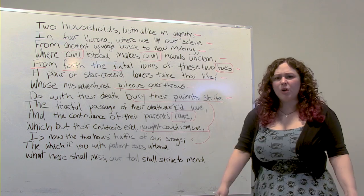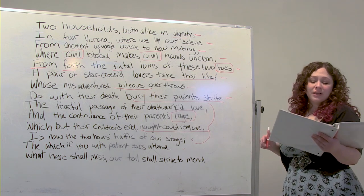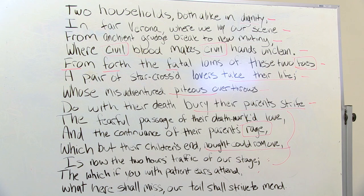Now that we've broken everything down, let's try reading it one more time. 'Two households, both alike in dignity, in fair Verona where we lay our scene. From ancient grudge break to new mutiny, where civil blood makes civil hands unclean. From forth the fatal loins of these two foes, a pair of star-crossed lovers take their life. Whose misadventured, piteous overthrows do with their death bury their parents' strife. The fearful passage of their death-marked love, and the continuance of their parents' rage, which but their children's end not could remove, is now the two hours' traffic of our stage. The which, if you with patient ears attend, what here shall miss, our toil shall strive to mend.'